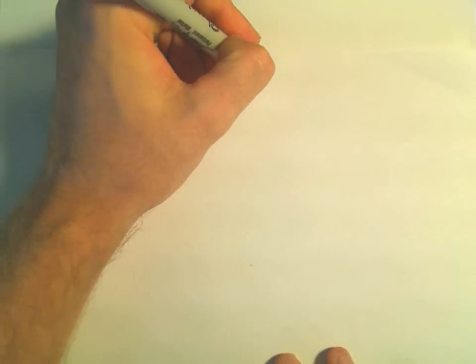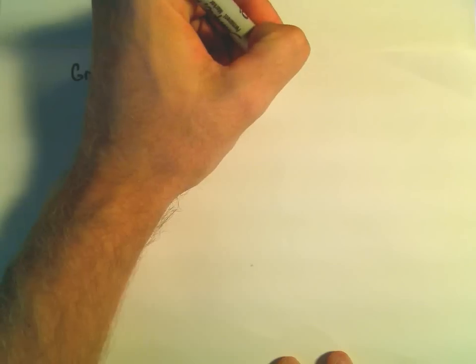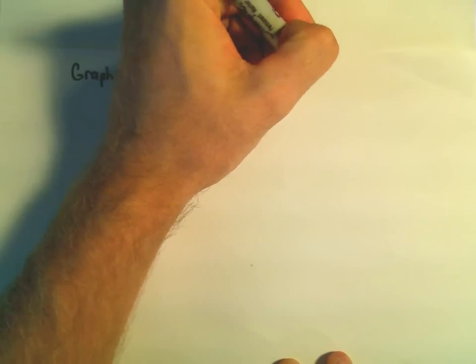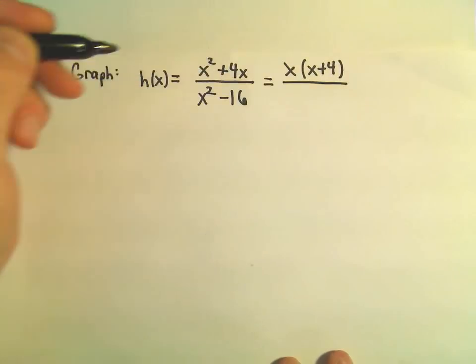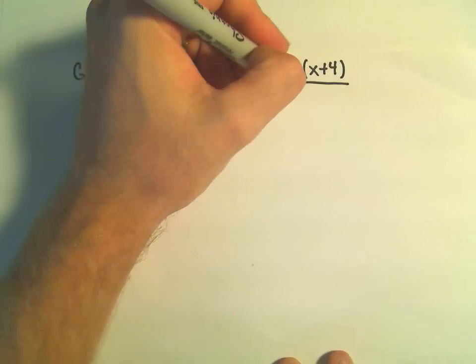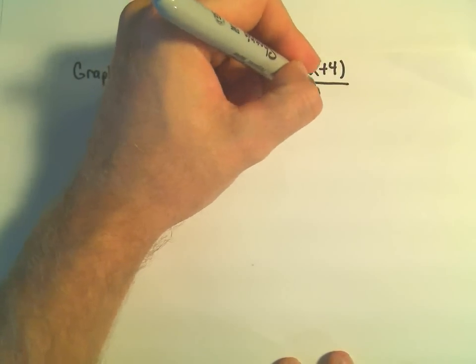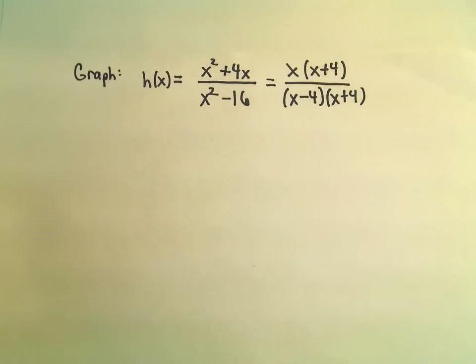So the first thing I'm going to do in this case is factor the numerator. Notice we could pull an x out. We have x plus 4 left over as our other factor. And notice the denominator factors as x minus 4, x plus 4.